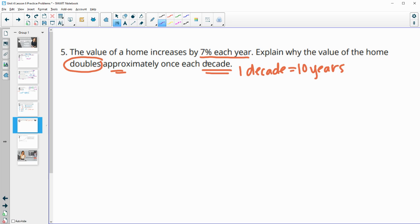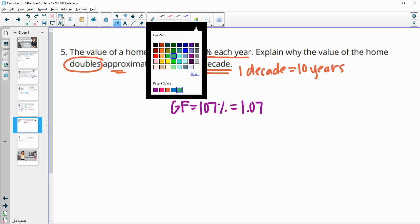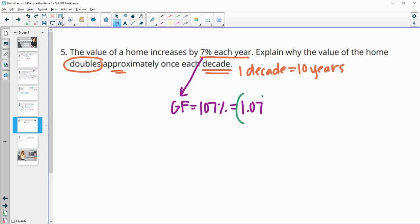So we want to come up with the growth factor here. So this is the growth rate. So then our growth factor is equal to 107% or as a decimal 1.07. So now we're going to take this growth factor and bring this 10 times. So 1.07 to the 10th is equal to 1.967. So approximately two. So almost doubles.